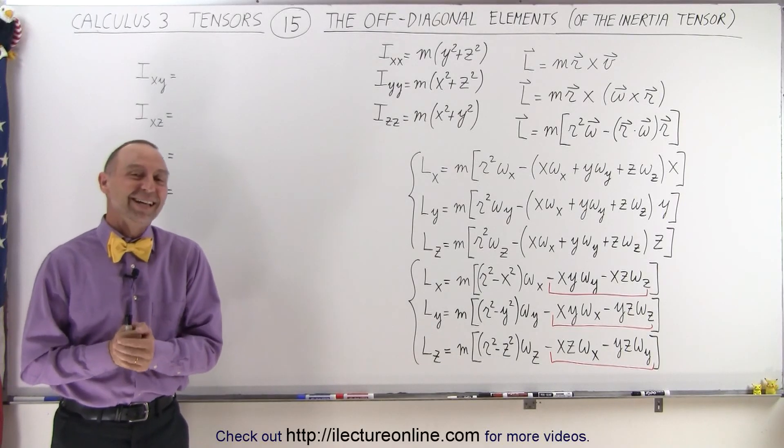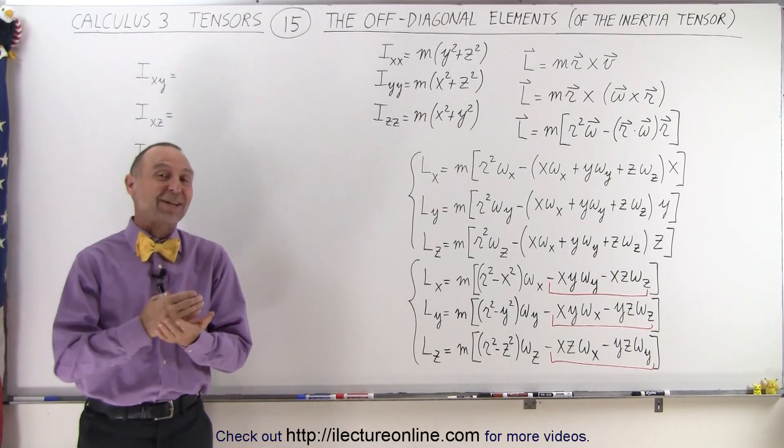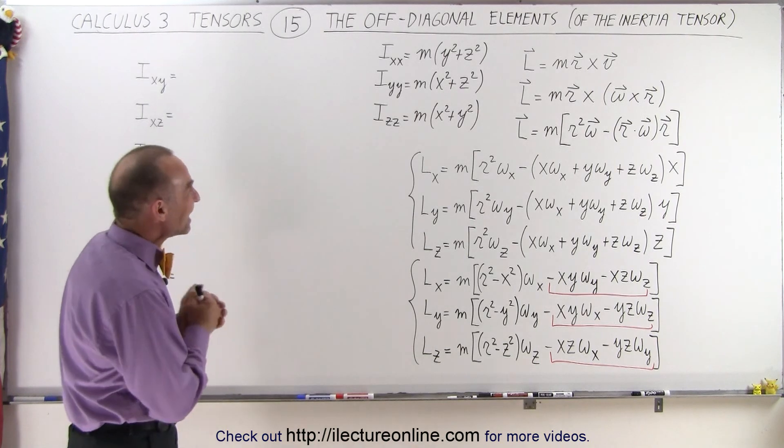Welcome to ElectronLine. Now let's see where the off-diagonal elements come from in the inertia tensor.